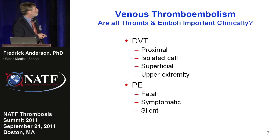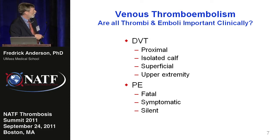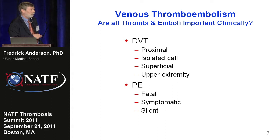In addition to simply saying deep vein thrombosis, we have proximal deep vein thrombosis, which is generally clots in the lower extremities above the knee. We have isolated calf thrombi, which stop before they enter the larger vessels at about the knee. We have superficial thrombi in the surface veins of the leg or arm. And we have upper extremity VTE. So there are quite a variety of DVT, and it's appropriate to ask: are all of these equal? The answer is no — proximal DVT is head and shoulders above the rest in terms of its clinical importance and its potential to cause death from pulmonary embolism.